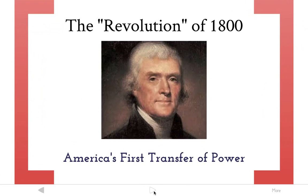Those five things were what Jefferson did when he became president, and he referred to them as the Revolution of 1800 because it was such a change from the policies of Adams and even to some extent Washington. America had a successful first transfer of power from one political party to another, and it really set the example that different ideas can come and go without violence or revolution — at least not the kind of revolution we're thinking of.